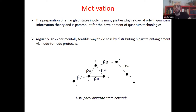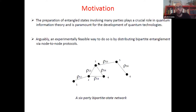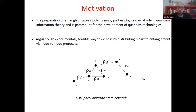In this example we see a six-party bipartite state network. Whenever we have an edge it means those parties share an entangled bipartite state; if they share only a separable state, there is no edge. Each vertex represents a party — for instance party three shares one particle from the state she shares with five, one with four, and one with two.